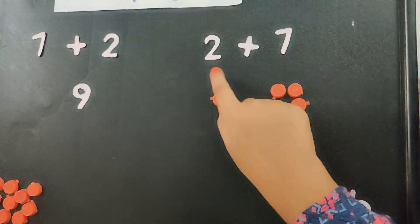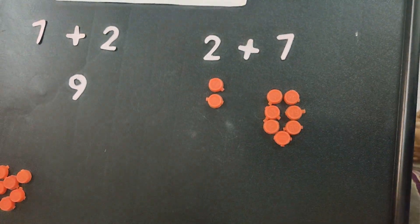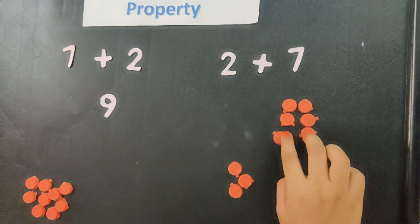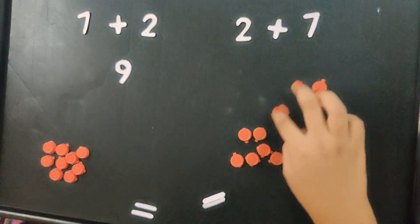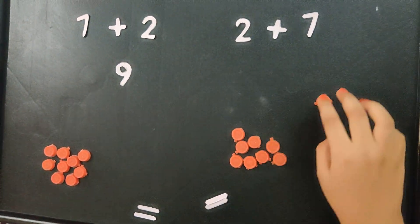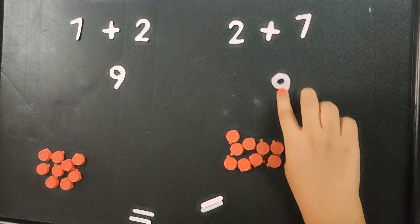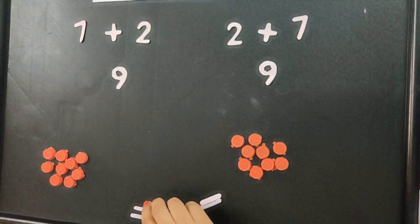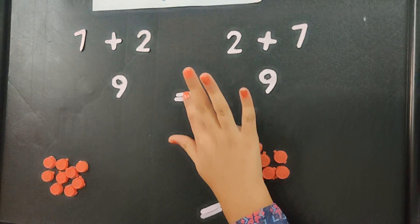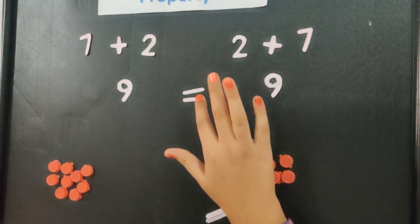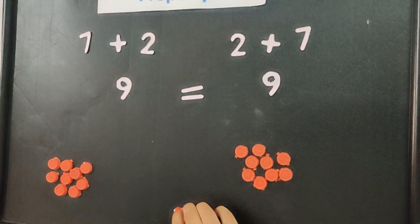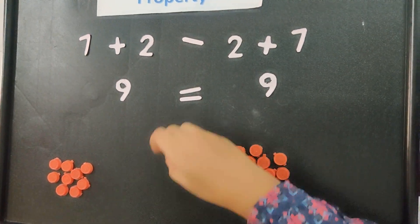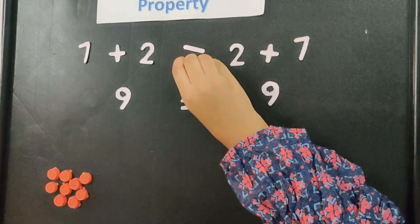Next, let's add 2 plus 7: 1, 2, 3, 4, 5, 6, 7, 8, 9. 2 plus 7 is also 9. So, 9 is equal to 9. Therefore, 7 plus 2 is equal to 2 plus 7.